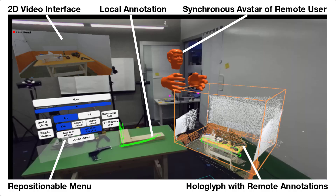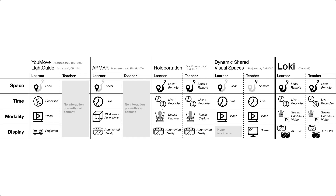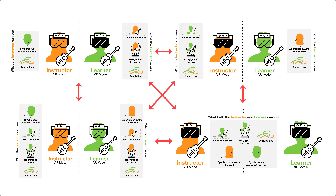We present Loki, a novel system which explores the various dimensions of this design space and aids in teaching physical tasks remotely. Loki leverages video, audio, and spatial capture along with mixed reality presentation methods to allow users to explore and annotate the local and remote environments, and record and review their own performance as well as their peers. In contrast to prior works, the system design of Loki also enables easy transitions between the elements of the explored design space.